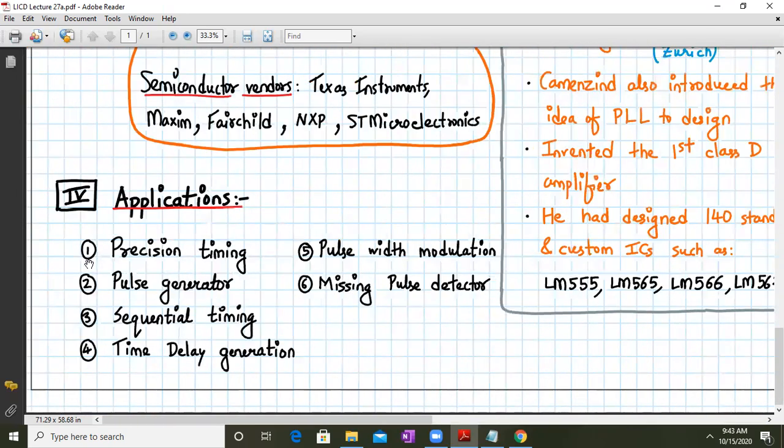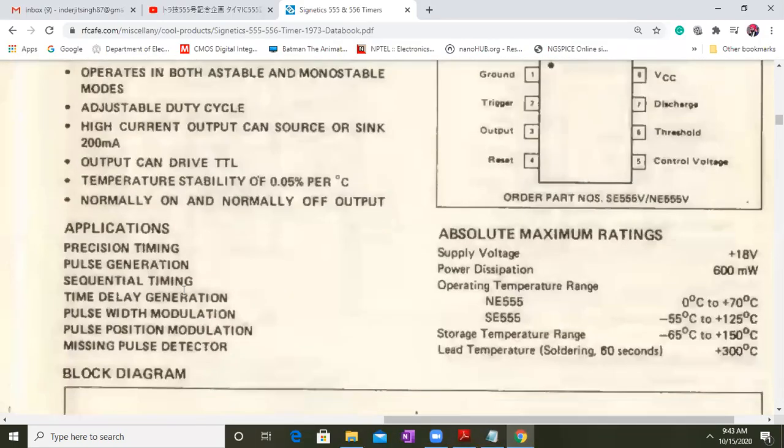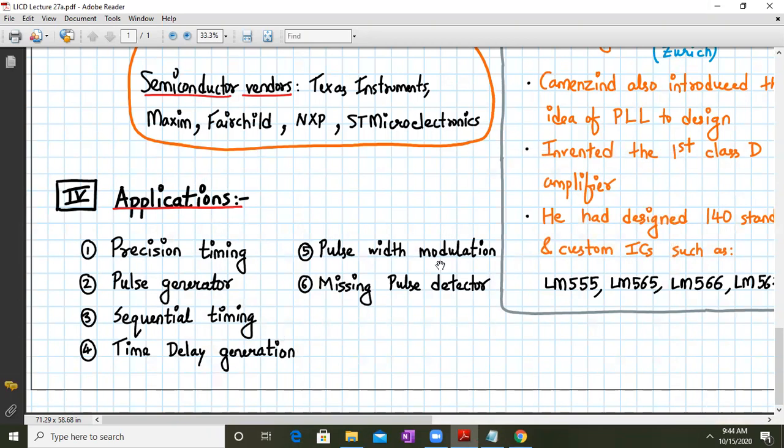And these are some of the applications. Again, I've taken from this data book over here. Same applications have written it down. So some of the applications of 555 timer is precision timing, pulse generator, sequential timing, time delay generation, pulse width modulation and missing pulse detector.